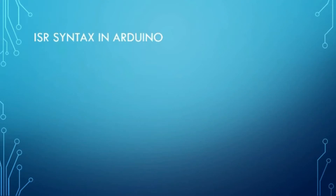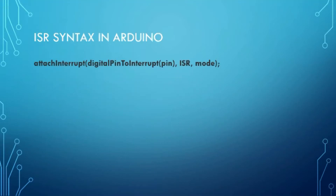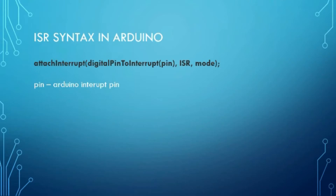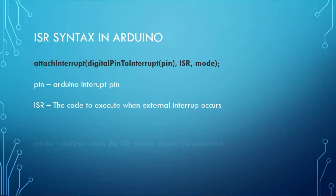The syntax for declaring the interrupt in the Arduino code looks like this. We use an attachInterrupt statement. The statement has three parameters. The first one is the number of the interrupt pin. The ISR is the function that is going to be executed when the interrupt kicks in. And then a mode.